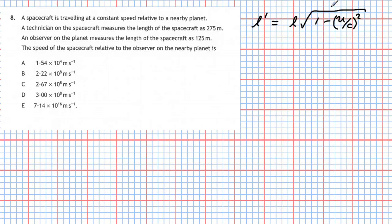L is what we call the proper length of the spacecraft — that's the length measured in its own reference frame by the technician, which is 275 metres. And l-prime is the relativistic length measured from the observer on the planet's inertial reference frame, which is 125 metres.